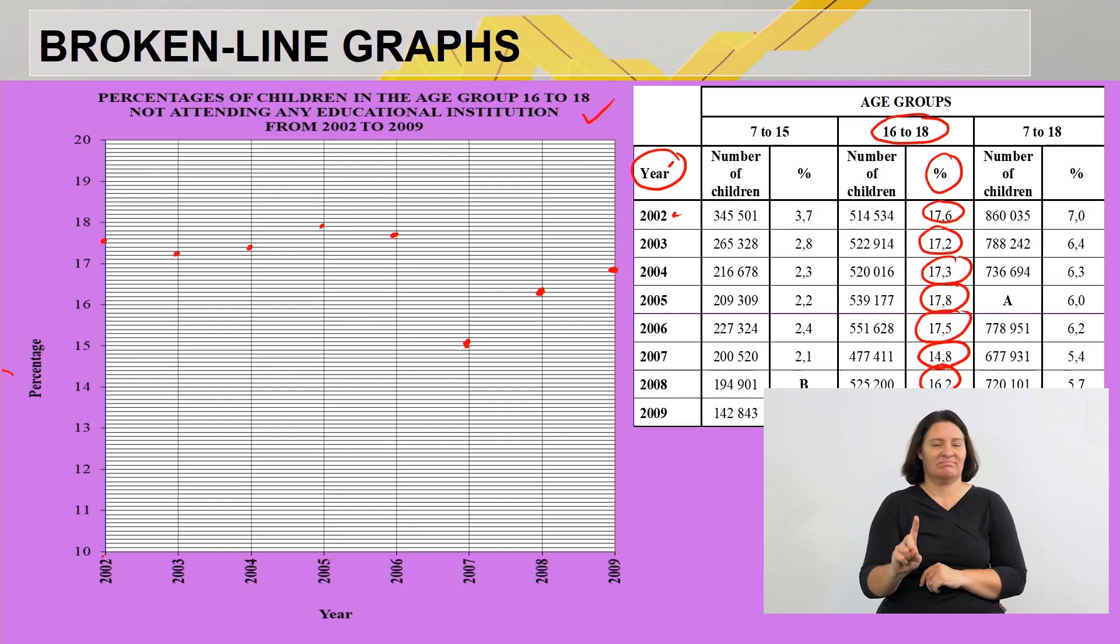Remember with a broken line graph we don't use straight lines to connect it. Therefore I'll indicate it with this broken line. So I move all the way down to 2007, and there we have our broken line graph. Let us quickly take a short break. After the break we'll continue with more graphs. See you now.